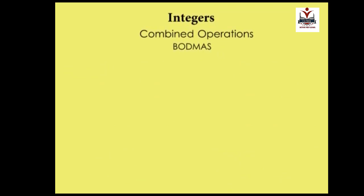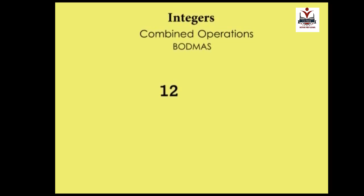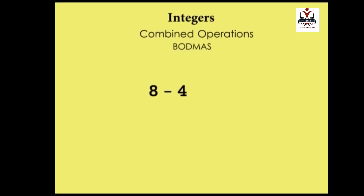For combined operations, when a question involves more than one operation, we use the BODMAS order. For example, 8 plus 20 divided by minus 5: we start with division — 20 divided by minus 5 is minus 4 — so we have 8 plus minus 4, which becomes 8 minus 4, giving us 4.